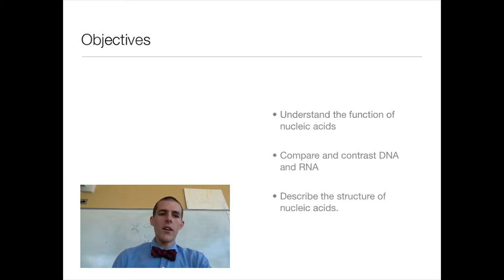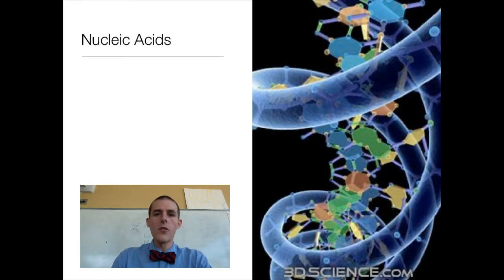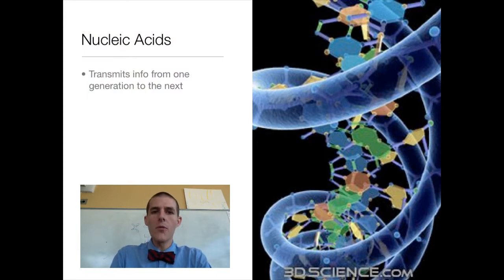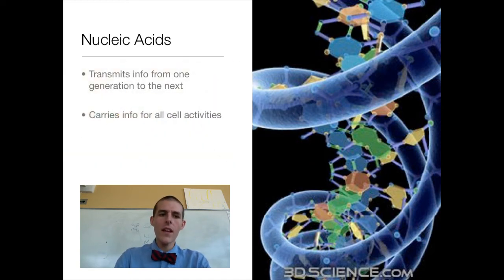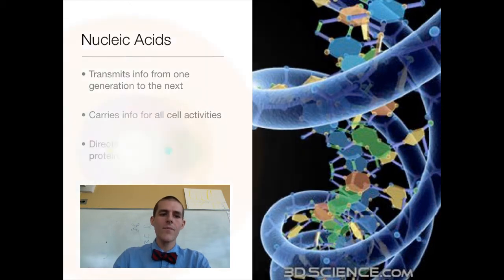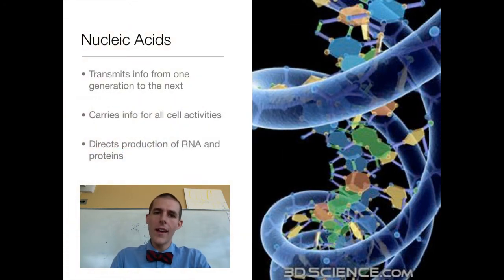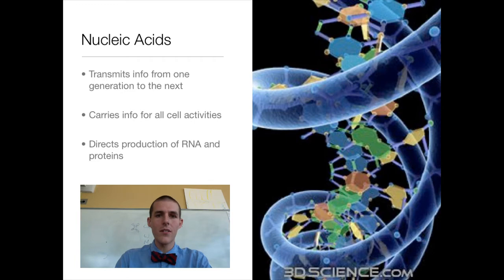Let's start by talking about nucleic acids themselves — what are they, what do they do? Their biggest purpose is they transmit information from one generation to the next. Everything that makes you you, those traits you inherited from your mom and dad — whether it's eyes, ears, nose, mouth, whatever — that is the work of nucleic acids. All information for every living thing in the world is contained in its DNA. It carries the info for all cell activities, and it directs the production of RNA and proteins. DNA itself is just information; it's RNA and proteins that actually get the work done. The living world would not exist without this molecule.